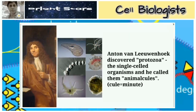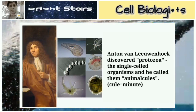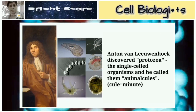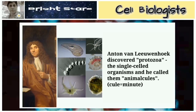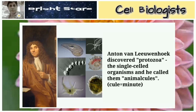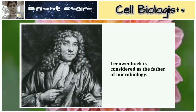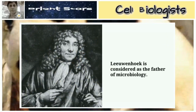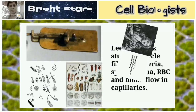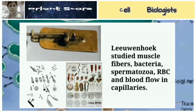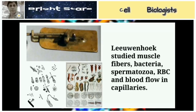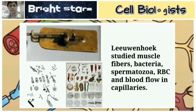Antony van Leeuwenhoek discovered protozoa — single-celled organisms — and he called them 'animalcules'; 'cule' means very minute. He is considered the father of microbiology. He studied muscle fibers, bacteria, spermatozoa, red blood cells, and blood flow in capillaries.